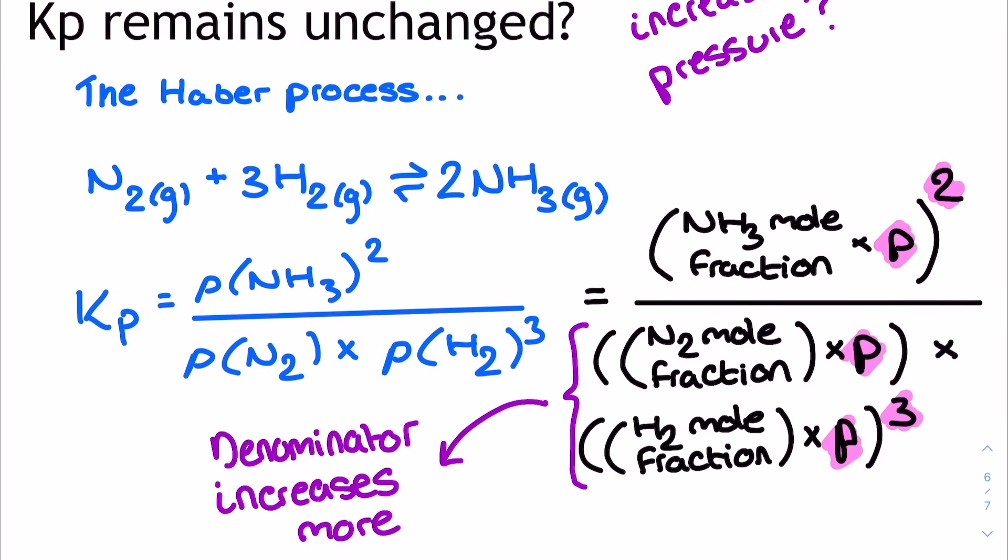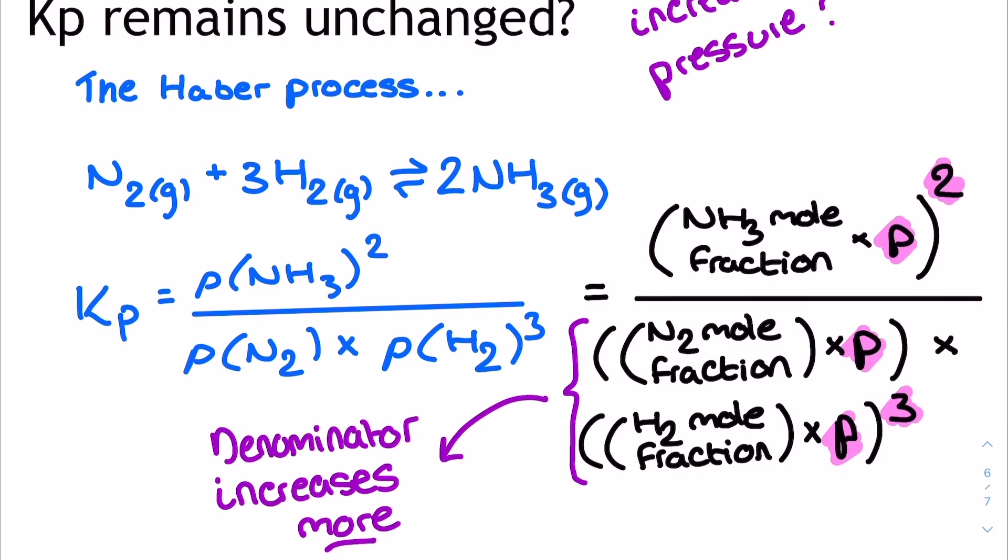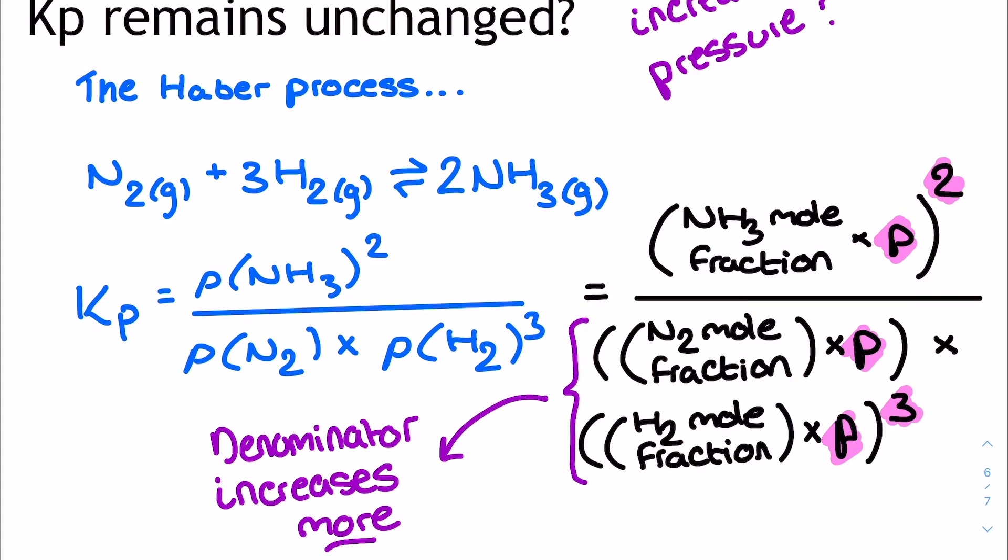whereas on the numerator, we've just got the partial pressure of the ammonia squared. So there's definitely more terms including pressure on the denominator.